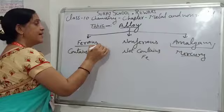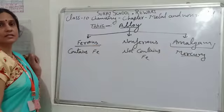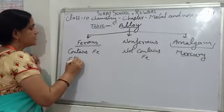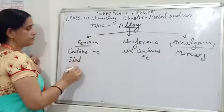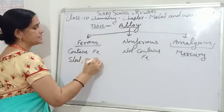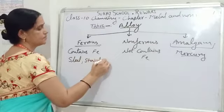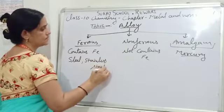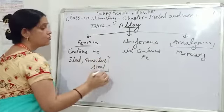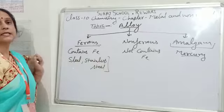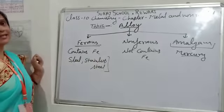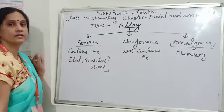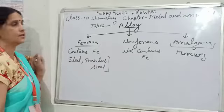Ferrous alloys — the examples are steel and stainless steel. These two alloys contain iron as their constituent elements, that's why they are ferrous alloys.